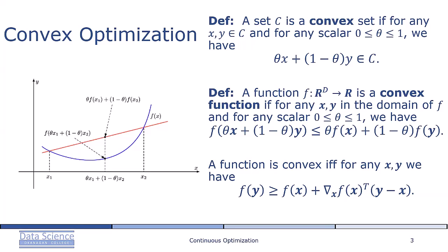A function f from R^d to R is a convex function if for any x, y in the domain of f, and for any scalar θ between 0 and 1, we have f(θx + (1-θ)y) ≤ θf(x) + (1-θ)f(y).